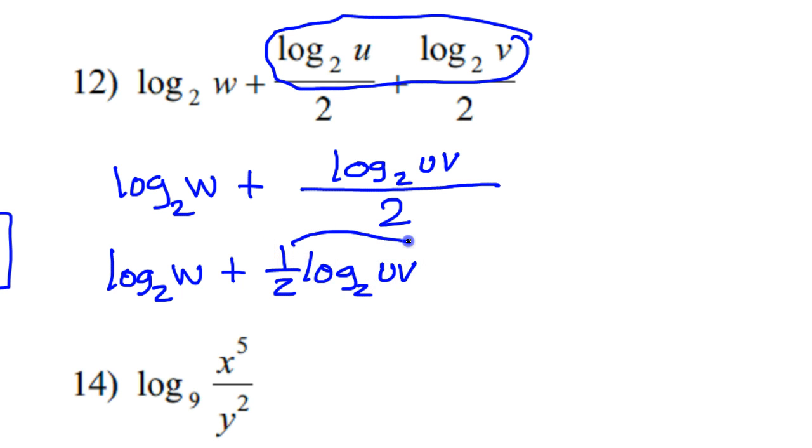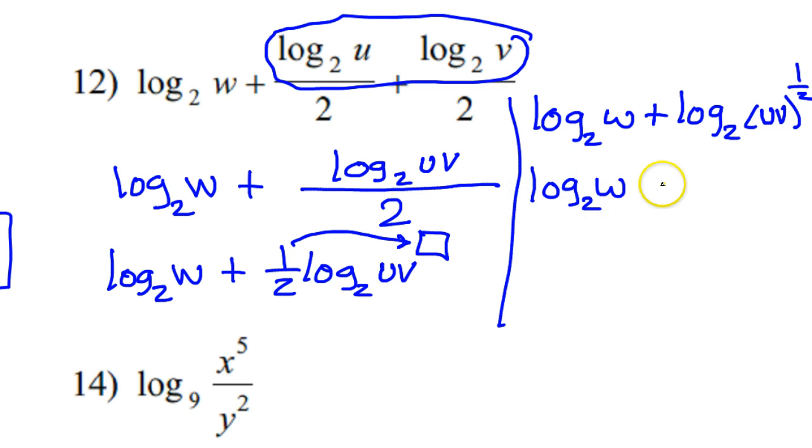But this is the same thing as having log base 2 of w plus one half log base 2 of uv and again I can take this number in the front and make it the power. So if I do that then I've got log base 2 of w plus log base 2 of uv to the one half power. Now one half power is the same thing as the square root. So this is the same thing as having log base 2 of w plus log base 2 square root of uv.